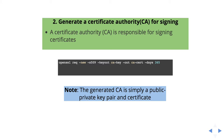A CA works like a government authority. Whatever certificate — if you use a certificate without the CA then it is invalid. That is the reason in this step we have to create the CA and we can use it in the future.